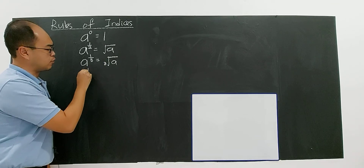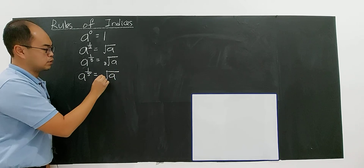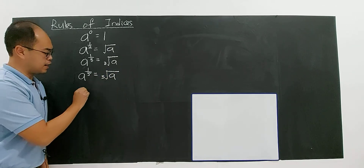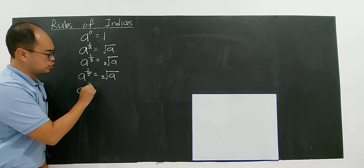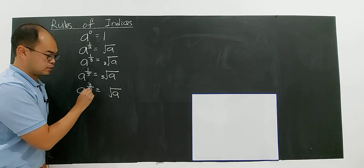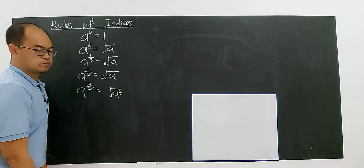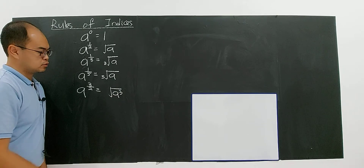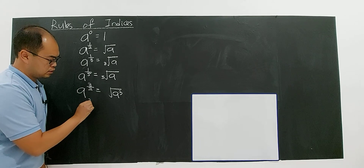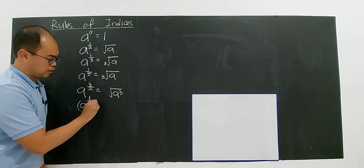If you have A to the power of 1 over 5, then it is written as the 5th root of A. Now, if you have A to the power of 3 over 2, you write it as the square root, then A to the power of 3. You can see that 3 over 2 is 1 over 2 to the power of 3.